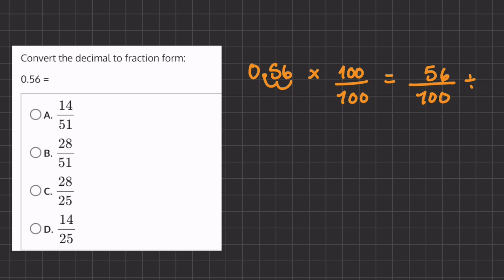So let's start out with simplifying by dividing the numerator and denominator by 2 because we know that both are even numbers. So 56 divided by 2 is 28, 100 divided by 2 is 50.